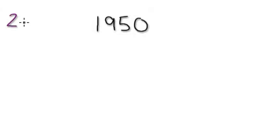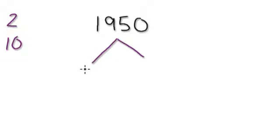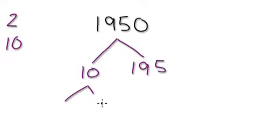Let me give you an example. When looking at this, well it's an even number, so I know I could use 2. But I can also use 10, because if I divide by 10 it gives me a whole number. I'm going to use 10 and 195. The 10 I can break up as 2 times 5. So 2 times 5 is 10.